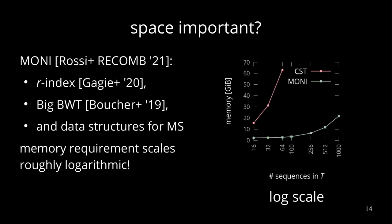Now it looks that space is important — can we do better? Yes, there is MONI. It's a solution presented by Rossi and Gagie, which got into RECOMB this year. It uses exactly the r-index approach, where the r-index is built with a big BWT. It also needs auxiliary data structures for the matching statistics. But you can see in the plot that the memory requirements scale roughly logarithmically, and note that the x-axis is in log scale, which we keep for the rest of the talk.